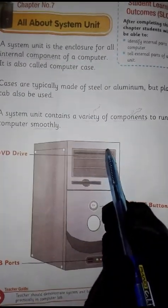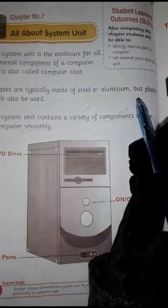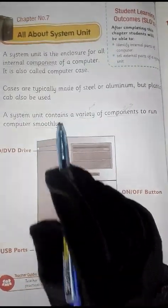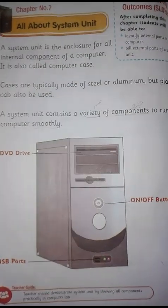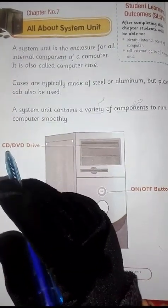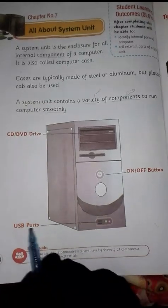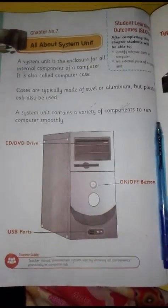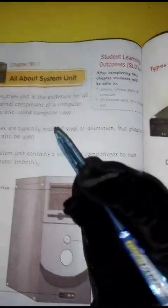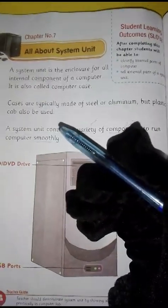The casing contains a variety of components to run the computer smoothly. The components of the system unit include the CD or DVD drive — CD stands for Compact Disc, DVD stands for Digital Versatile Disc — as well as the on/off button and USB ports. These are the external parts of the system unit, but today our topic will be the internal parts of the computer, which are the electronic components used inside.